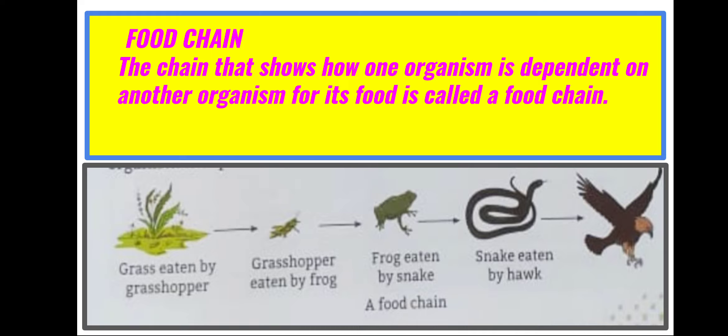Hello children, in this video we will know about food chain and how plants and animals depend upon each other. We all know the ultimate source of energy on the earth is the sun. Green plants prepare their food with the help of solar energy. Animals get energy by eating plants as their food. Plants are eaten by herbivores which in turn are eaten by carnivores, thus forming a chain.